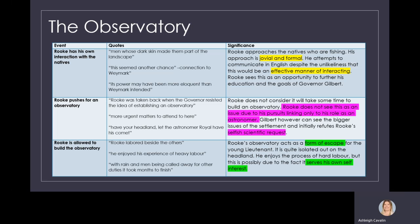That leads us to the point where Rook is allowed to build the observatory. Rook's observatory acts as a form of escape. It is quite isolated out on the headland. He enjoys the process of building the observatory and the hard labour involved, but this is possibly only due to the fact that it serves his own self-interest.